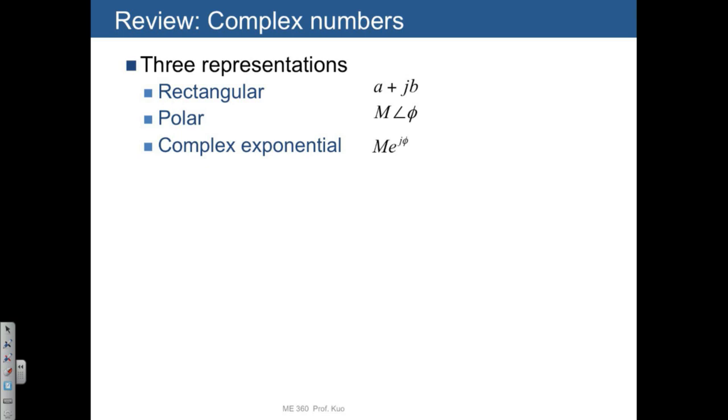We can illustrate this just by sketching out the real and the imaginary axes and noting that number X might be described by real and imaginary parts A and B. And if we thought about that in polar coordinates, we might have a vector of magnitude M and angle phi.